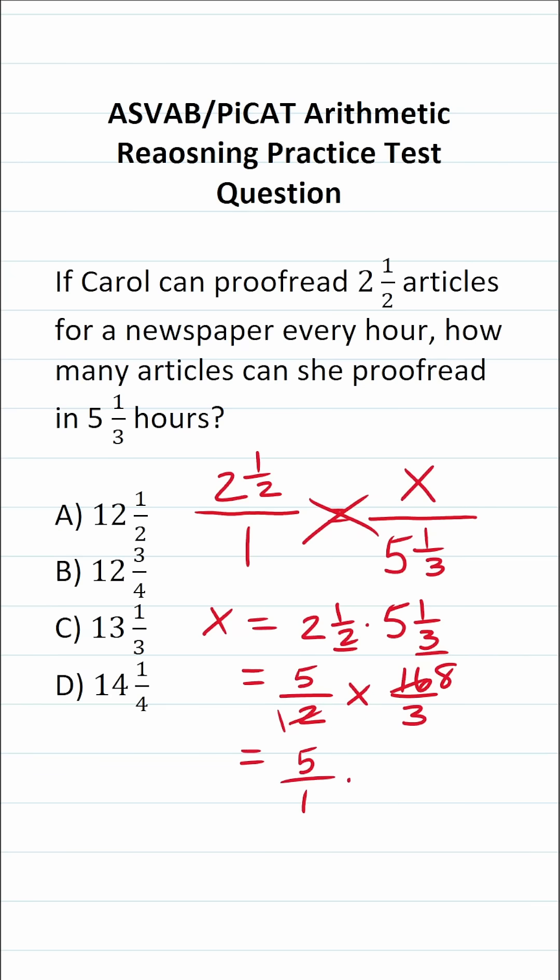So this becomes five over one times eight over three. And when you multiply fractions, you just multiply straight across. So this becomes five times eight, which is 40, over one times three, which is three.